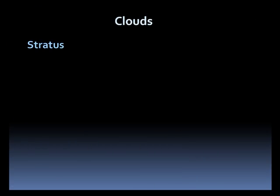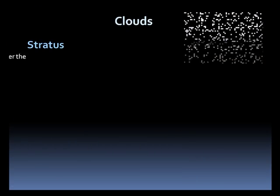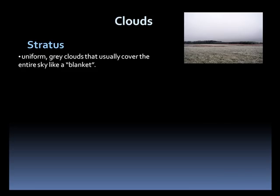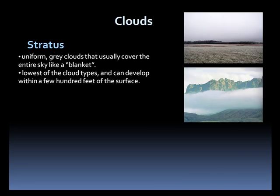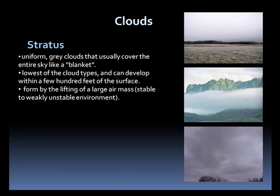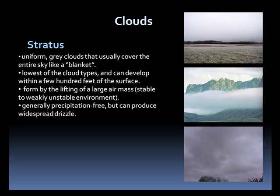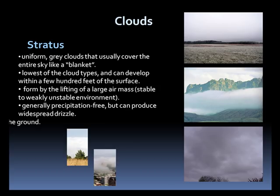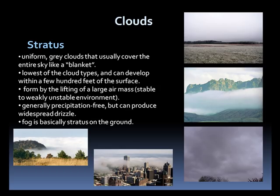Stratus clouds are uniform in appearance, generally forming a broad blanket of low-hanging gray clouds. They usually develop within a couple hundred feet of the surface and form by lifting a large air mass. Mostly they are precipitation-free but can produce widespread drizzle, light rain, or light snow. Fog is essentially stratus on the ground.